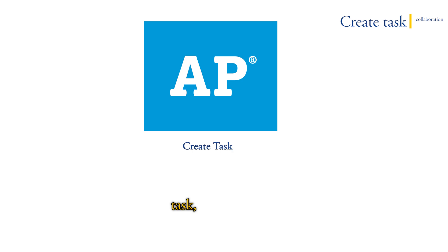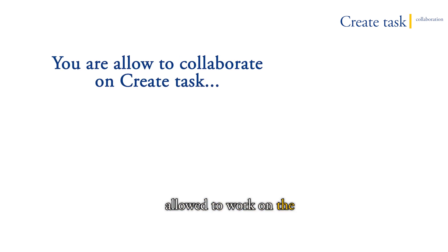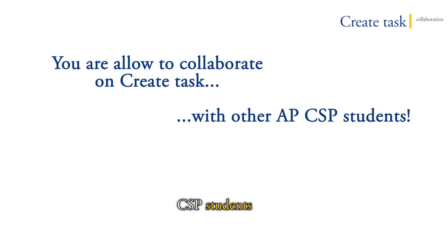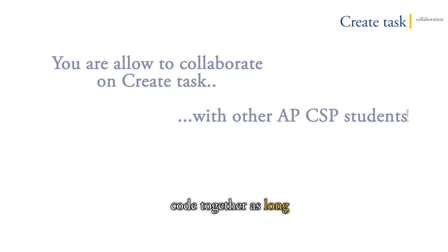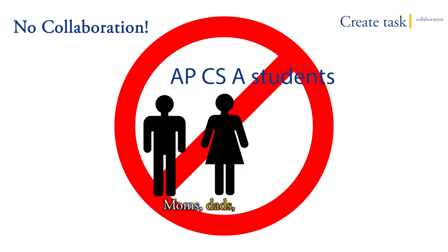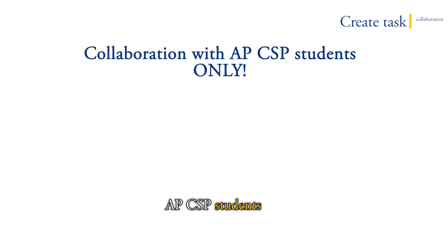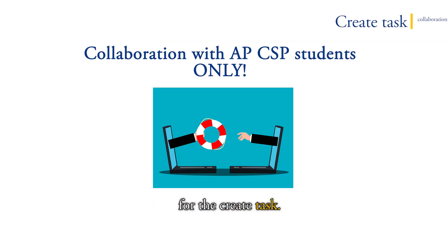The entirety of Topic 1 is related to the APCSP Create task, which is a big performance task you'll do over nine hours in class. The key takeaway for Topic 1.1 with respect to the Create task is this: you are allowed to work on the Create task in collaboration with other CSP students only. They can help you write the code, help you debug, and you can even write code together as long as you cite that. But who you can't collaborate with includes APCSA students, moms, dads, grandmas, family friends, tutors, and teachers — no help from them. APCSP students will be your lifeline for the Create task.